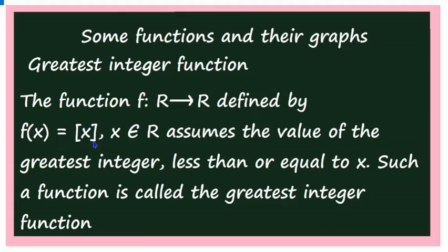You write it as ⌊x⌋ (box x), where x belongs to R. It assumes the value of the greatest integer less than or equal to x. Such a function is called the greatest integer function. The definition alone may be hard to understand, so I will explain it on a number line.